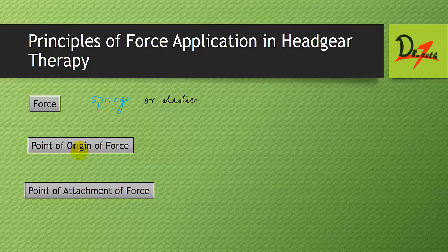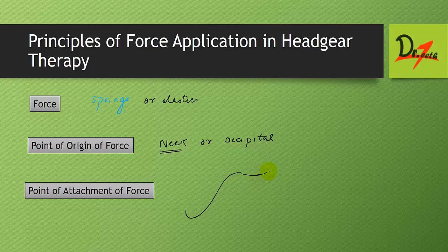The point of origin of force is the anchor site of the headgear — it could be the neck, the cervical region, the occipital region, or both. The point of attachment of force is the point on the outer bow to which the force element is attached. By altering the length or angulation of the outer bow, it is possible to alter the line of action of force.